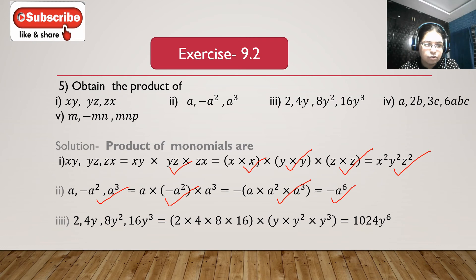Third bit: 2, 4y, 8y square and 16y cube. 2 multiplied with 4 is 8, 8 multiplied with 8 is 64, and 64 multiplied with 16 is 1024. y multiplied with y square multiplied with y cube is y to the power 1 plus 2 plus 3, which is y to the power 6. So we get 1024y to the power 6.